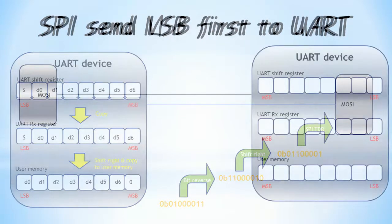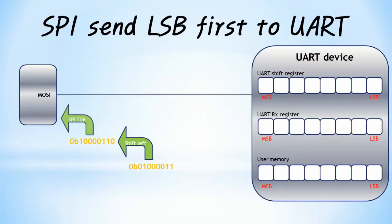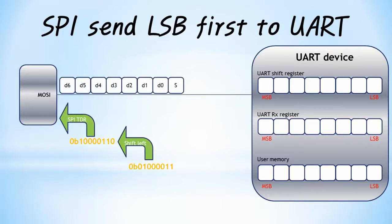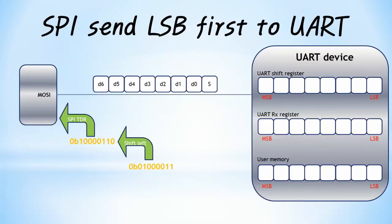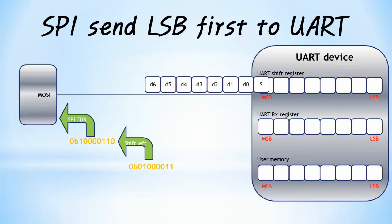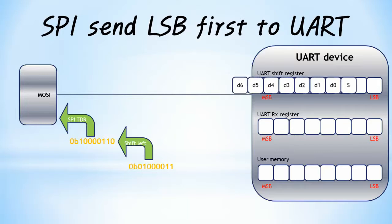This is an example of transmitting data to UART using SPI LSB first. Shift left by 1 bit so that bit 0 operates as start bit and transmits to UART. The UART samples the start bit and 7 data bits in the idle state and stores it in the shift register. When all 8 data bits — start bit plus 7 data bits — are received, they are copied from the UART shift register to the receive data register. The user can then shift the received data register right and copy it to user memory.